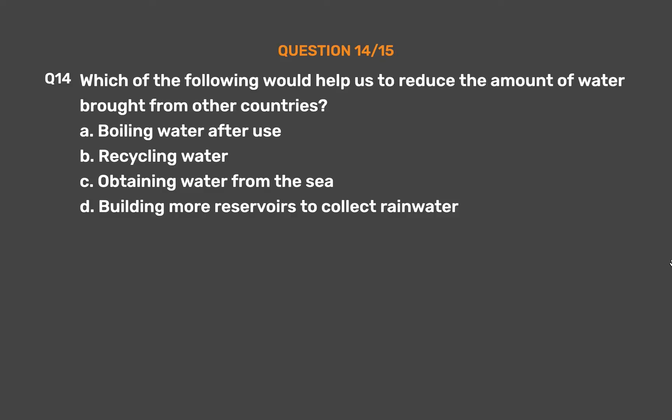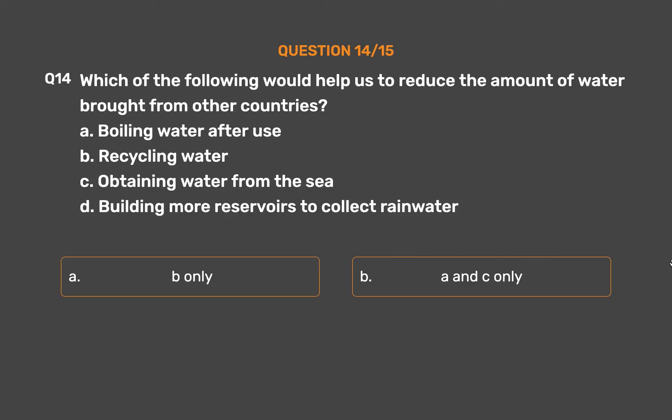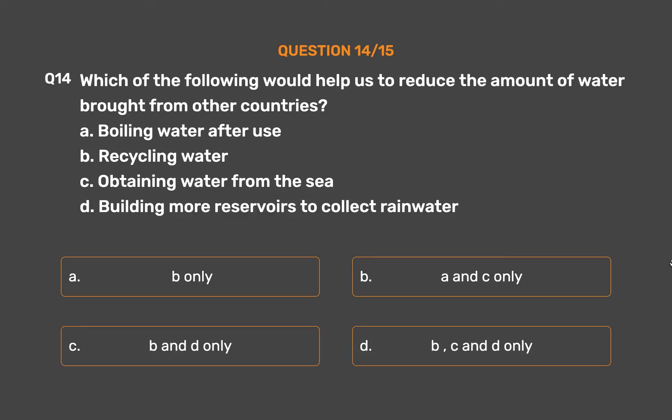Question number fourteen: Which of the following would help us reduce the amount of water brought from other countries? A: boiling water after use, B: recycling water, C: obtaining water from the sea, D: building more reservoirs to collect rainwater. Option A: B only, option B: A and C only, option C: B and D only, option D: B, C and D only.